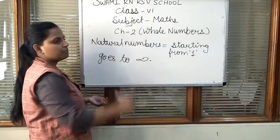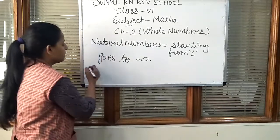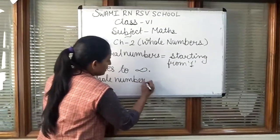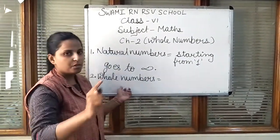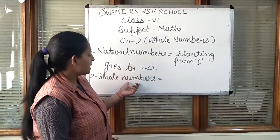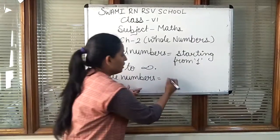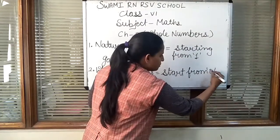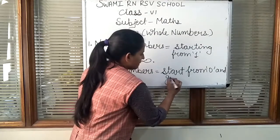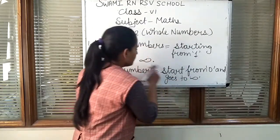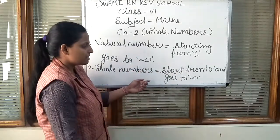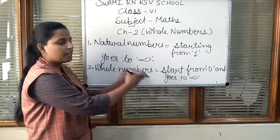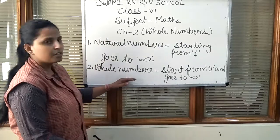Next we are moving to the second group: whole numbers. Which type of numbers are included in the whole numbers? In the whole numbers, 'whole' means the shape of a whole, which is 0. The difference between natural numbers and whole numbers is only 0, because the whole numbers start from 0. The whole number starts from 0 and goes to infinity. Numbers starting from 0 and going to infinity are included in the whole numbers.